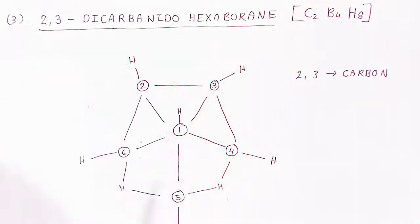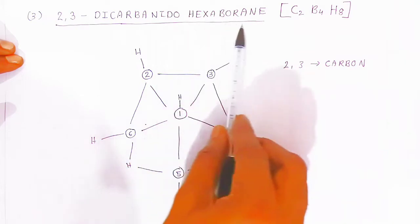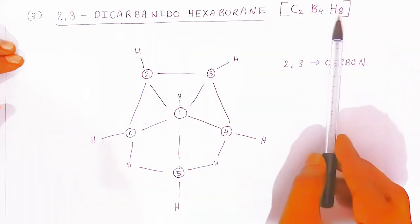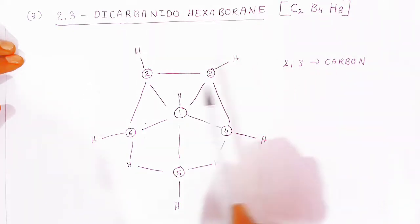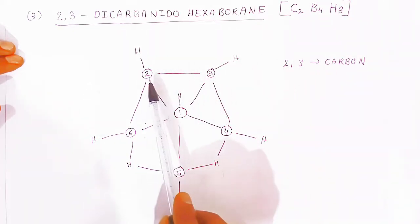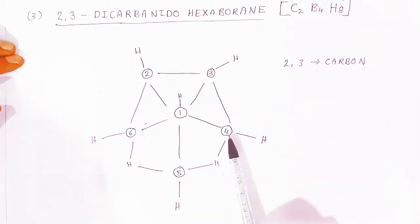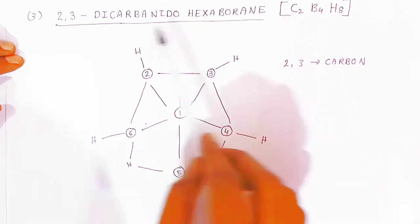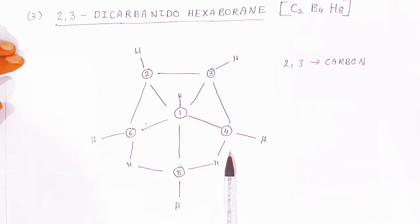One more structure is called 2,3-Dicarbon nido hexaboron. Dicarbon means two carbons, and the formula is C2B4H8 — four boron and eight hydrogen atoms. At positions 2 and 3 in this structure there are carbon atoms, and the other positions have boron atoms. That is why it is called 2,3-Dicarbon nido hexaboron.